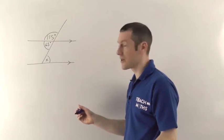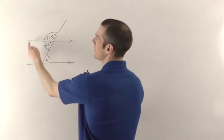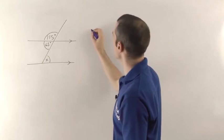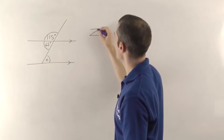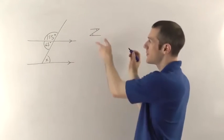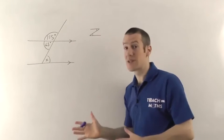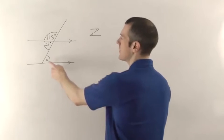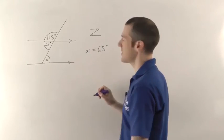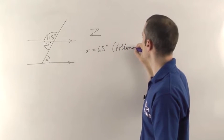Now I can see a Z shape — along there, down here, and along there. The two angles that sit inside the crooks of the arms of the Z are called alternate angles and they're always the same. So X would have to be 65 degrees because it's alternate.